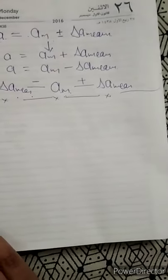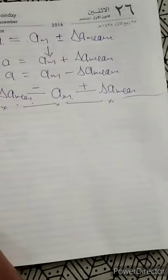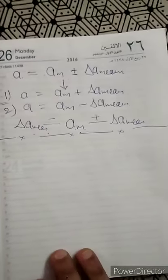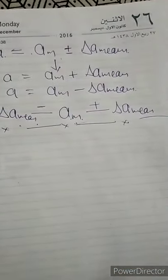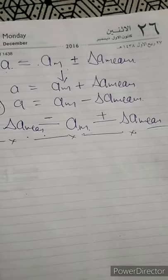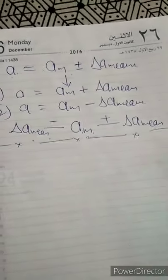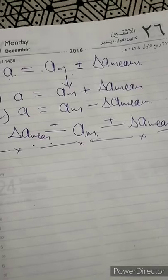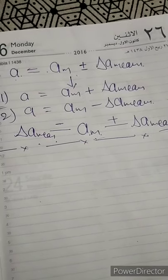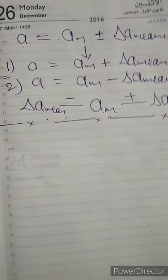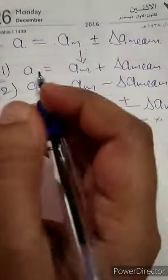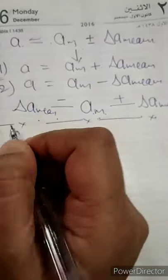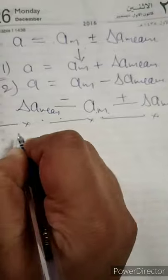Good morning students. My name is Arwa and my channel name is Arwa and Physics. We are in a series on errors and measurements. As we discussed in part 1 about absolute error and mean error, in this part I want to cover one more thing which I forgot in part 1, and that is relative error or fractional error.